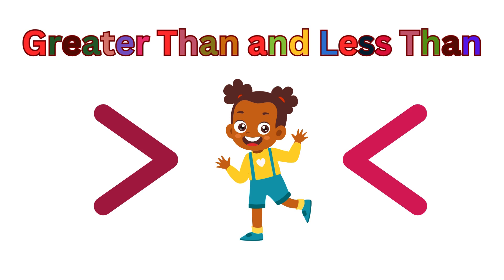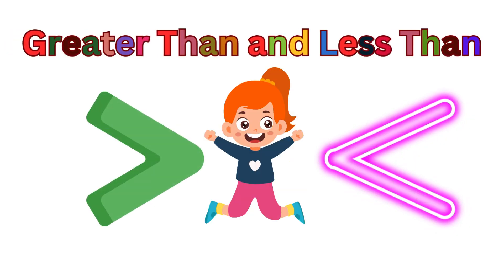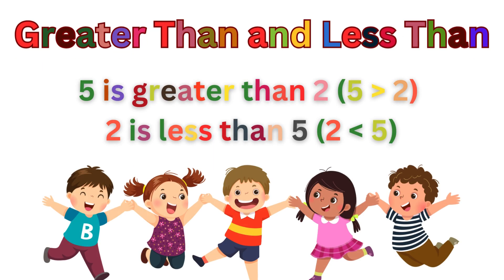Greater than and less than. These symbols show comparison. Greater than means bigger and less than means smaller. 5 is greater than 2 and 2 is less than 5.